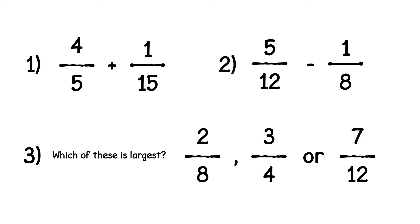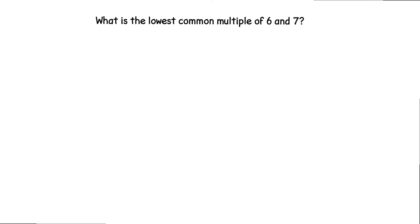We find common denominators by using the lowest common multiple. Let's recap lowest common multiple by using an example. What is the lowest common multiple of six and seven?